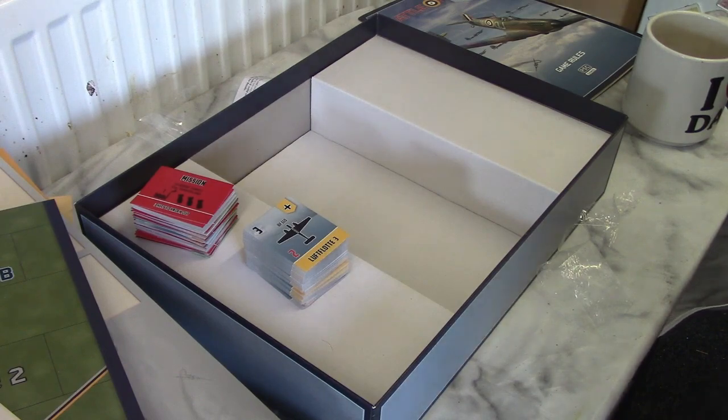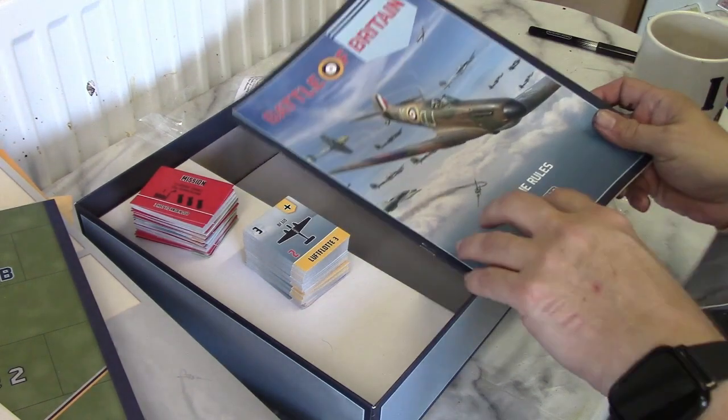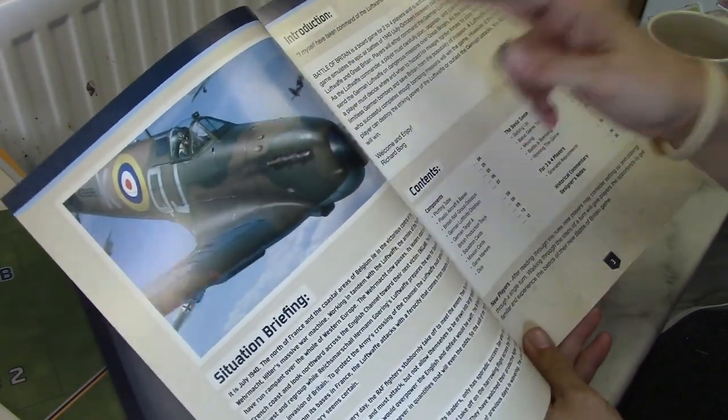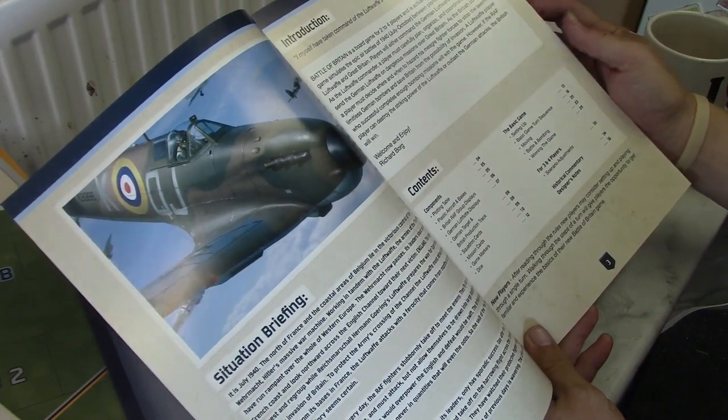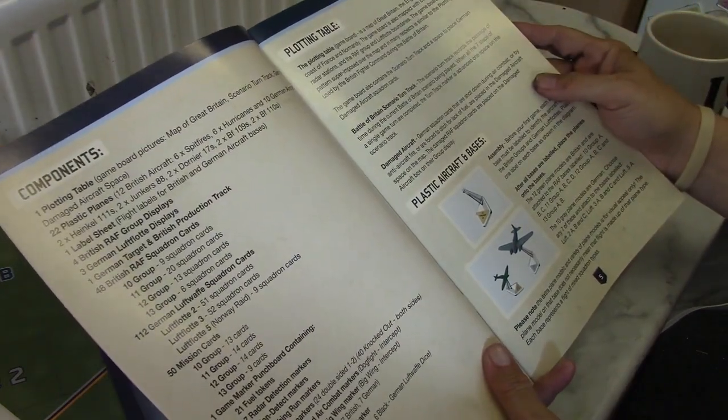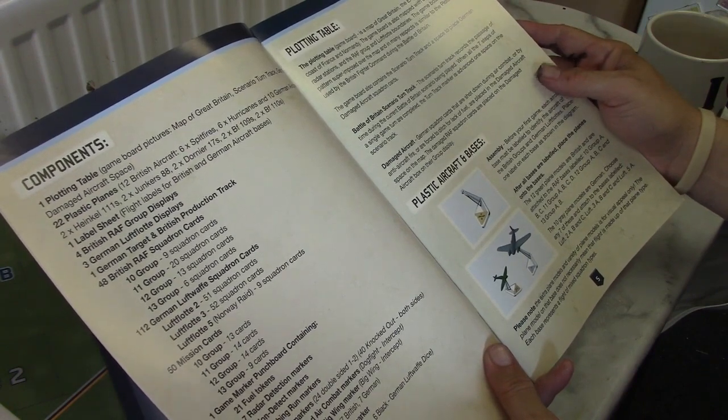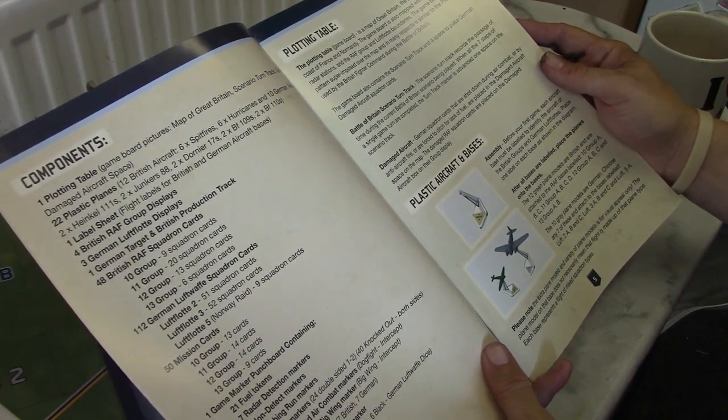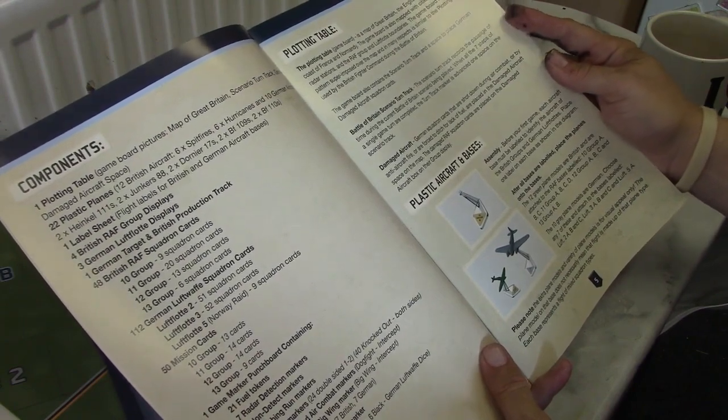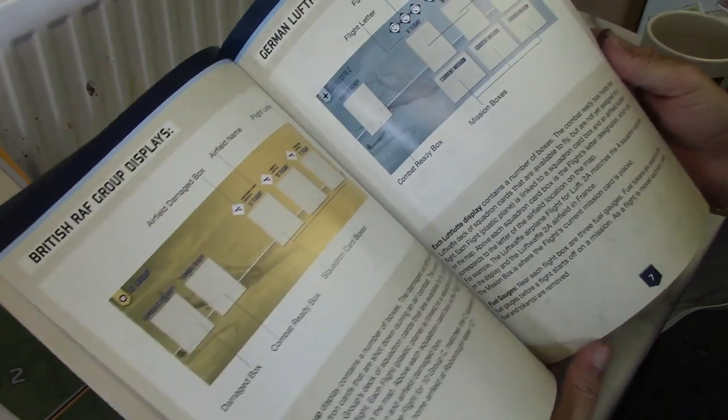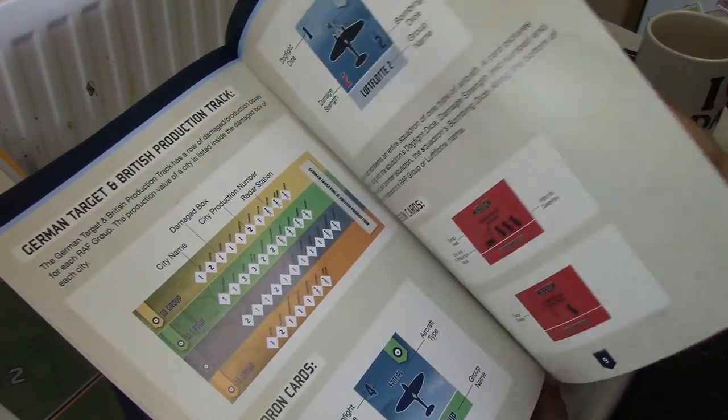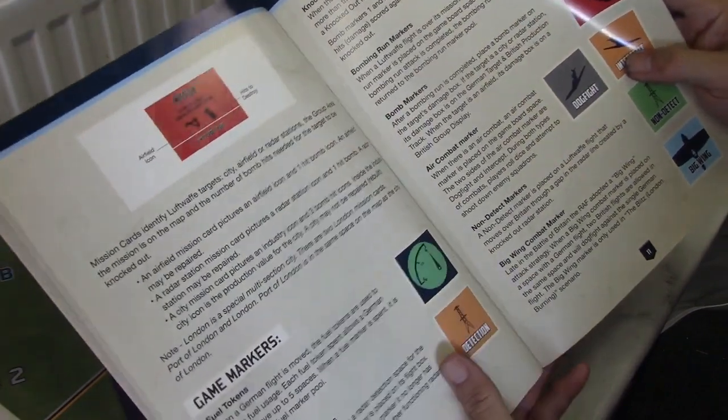And then we've got the rules. Now the rule book is a lot thicker than the old one. You know, nice little quotes: 'I myself have taken command of the Luftwaffe's battle for Britain' by Herman Goering. Gives you a nice situational briefing. I think we forget how this wasn't a preordained victory. You know, it was something that they didn't know at the time how it was going to come out. And I think that's something that's easy to forget when you look at history. So it talks about assembling everything, it talks about the different group displays, the production track and the German targets, knocked out markers - that was what they were, I couldn't remember what they were for.